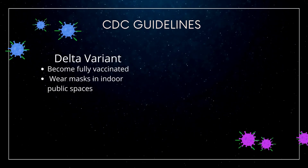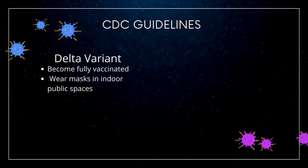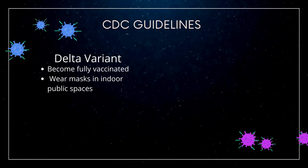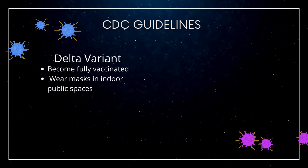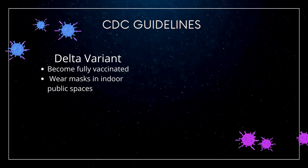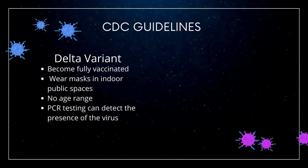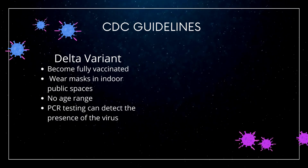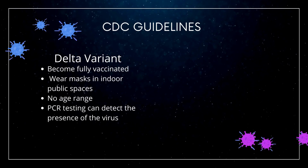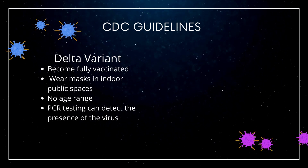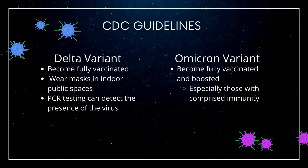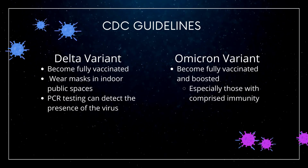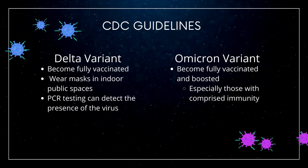The CDC guidelines for the Delta variant recommend that people become fully vaccinated. They also recommend wearing a mask in indoor public spaces, and do not mention an age range for either of these recommendations. PCR testing can detect the presence of this variant in the body.